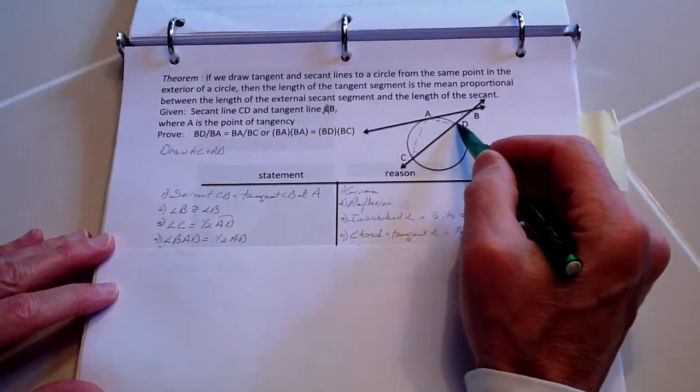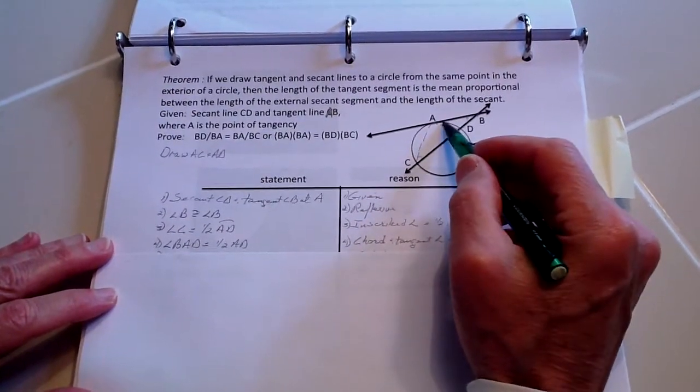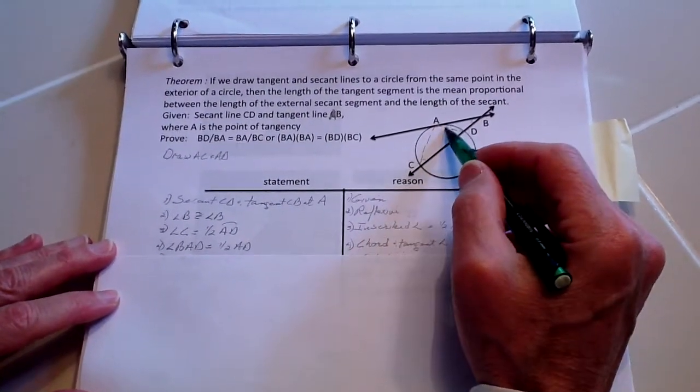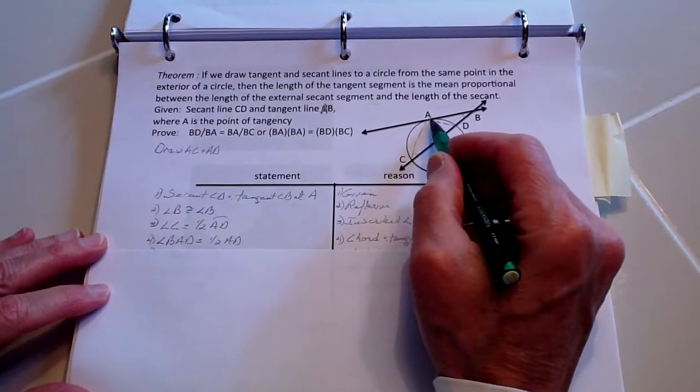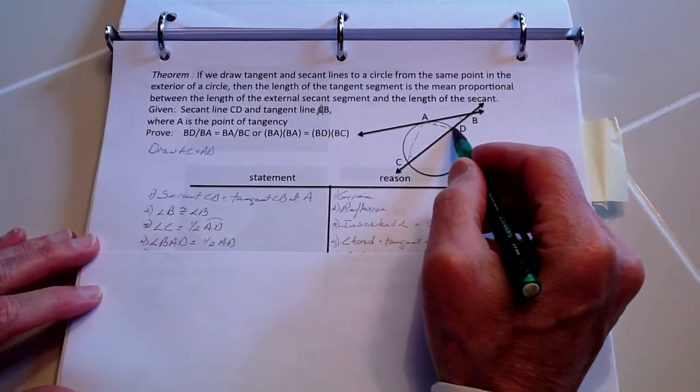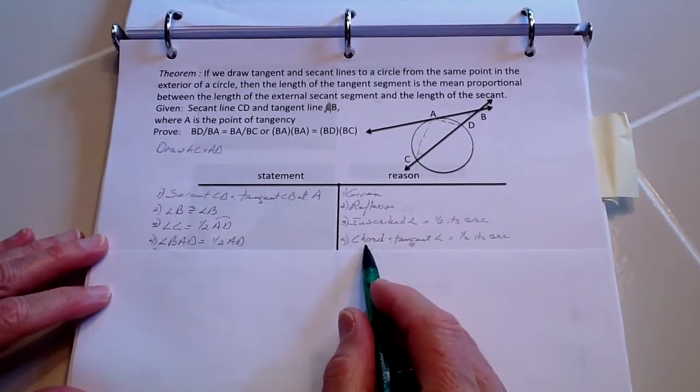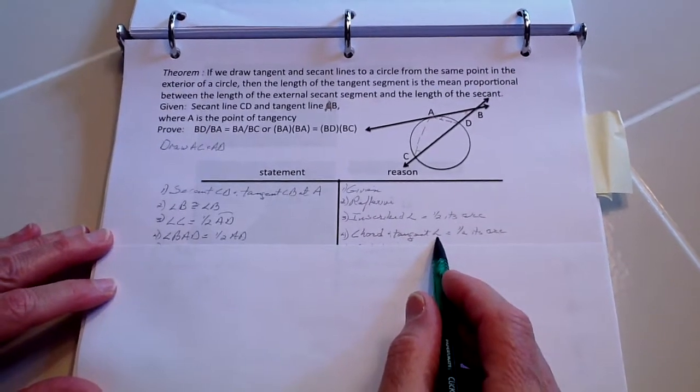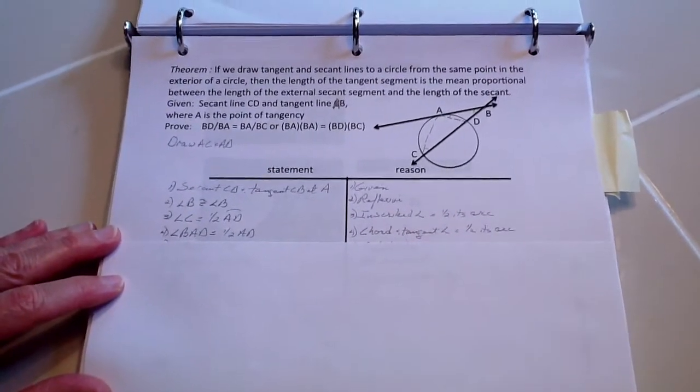Likewise, angle BAD, this angle right here, is going to equal one half of this arc, same arc, because the tangent angle is equal to one half its arc.